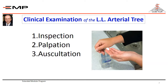This is followed by local examination that includes inspection, palpation, and auscultation to assess the arterial circulation. Don't forget to wash your hands or rub your hands with alcohol gel. Part 3 demonstrates the characteristic signs of chronic ischemia that could be looked for by inspection.